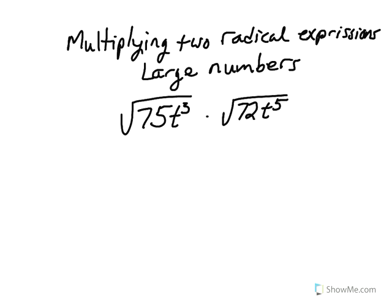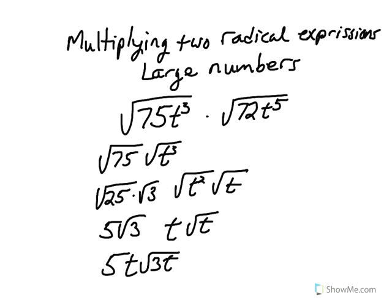Take a minute and reduce the square root of 75t cubed. Please pause the video while you do this. By reducing the square root of 75t cubed, we get 5t times the square root of 3t. Please copy this into your notes.